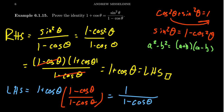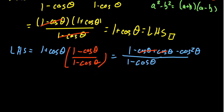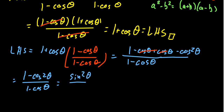Then multiply out the numerator: one times one is one, minus cosine theta, plus cosine theta, minus cosine squared theta. You'll notice you have a plus cosine and a minus cosine — they cancel each other out. You end up with one minus cosine squared theta over one minus cosine theta. Recognizing that one minus cosine squared is a Pythagorean identity, you replace it with sine squared theta over one minus cosine theta, which is the right-hand side. So you can do either direction.